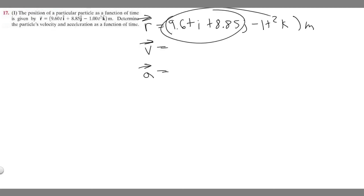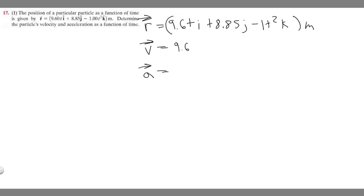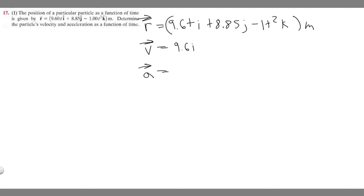To find the velocity function we just take the derivative of r(t). The derivative of 9.6t is 9.6, so we get 9.6·i. The derivative of 8.85·j is zero since it's a constant, so we drop it. For -t², we bring the exponent out front: -2t, keeping the k. So velocity v = 9.6·i - 2t·k, in meters per second.